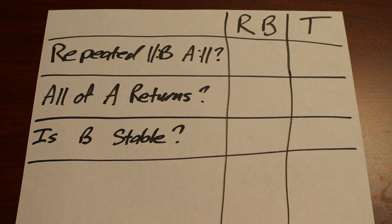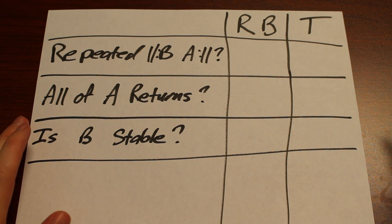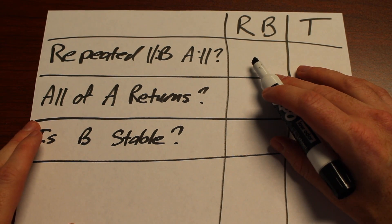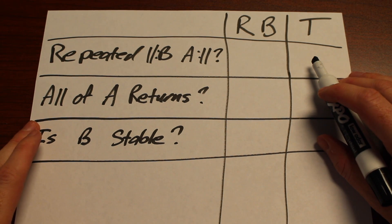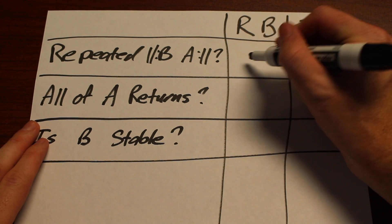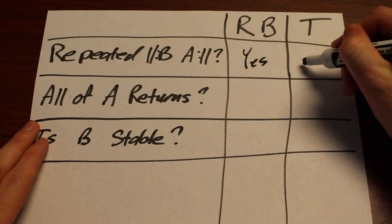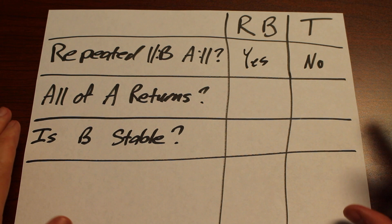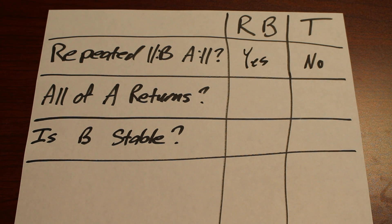Question number one: is the BA part of the ABA form repeated? If it is repeated, that's a trait of rounded binary. If it's not repeated, that's a trait of ternary. So rounded binary: yes; ternary: no. That's a very easy thing to assess just by looking at the score.